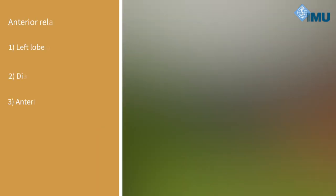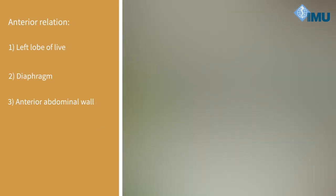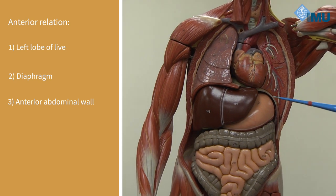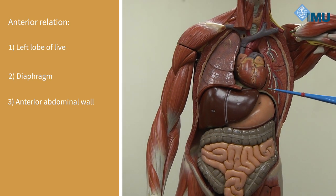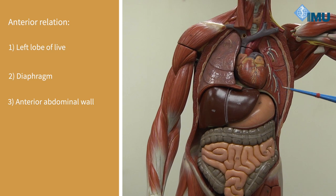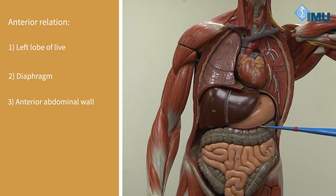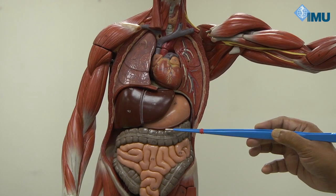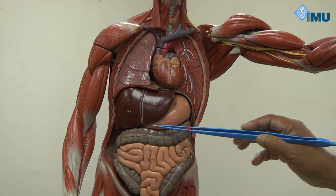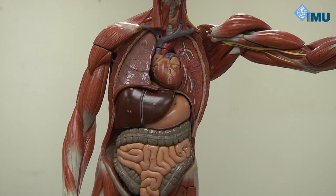Looking at the anterior aspect of the stomach, the anterior relations are the left lobe of the liver, the diaphragm, and the anterior abdominal wall. The lower part of the stomach is actually overlapped by the transverse colon.